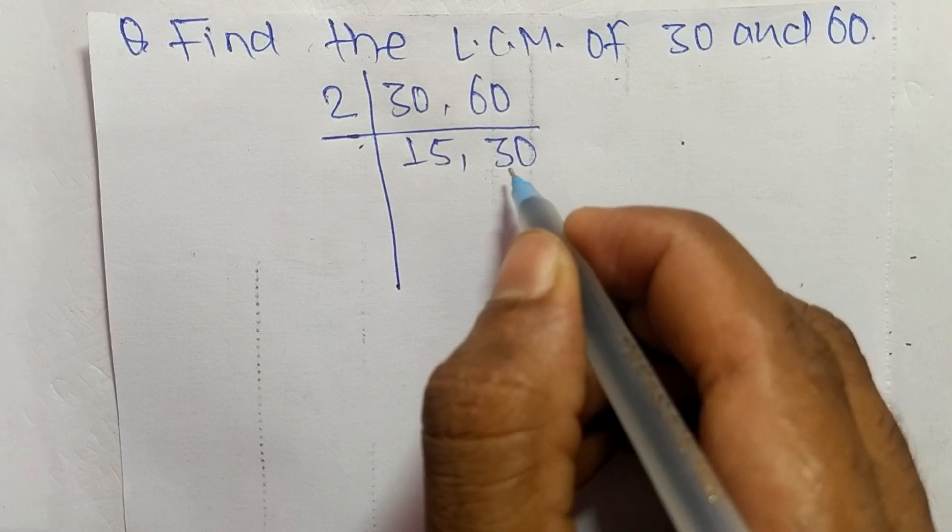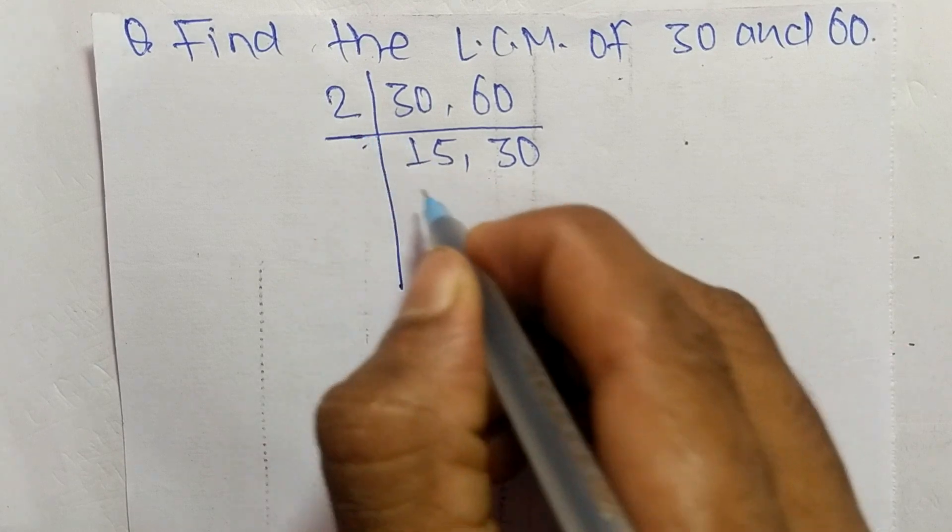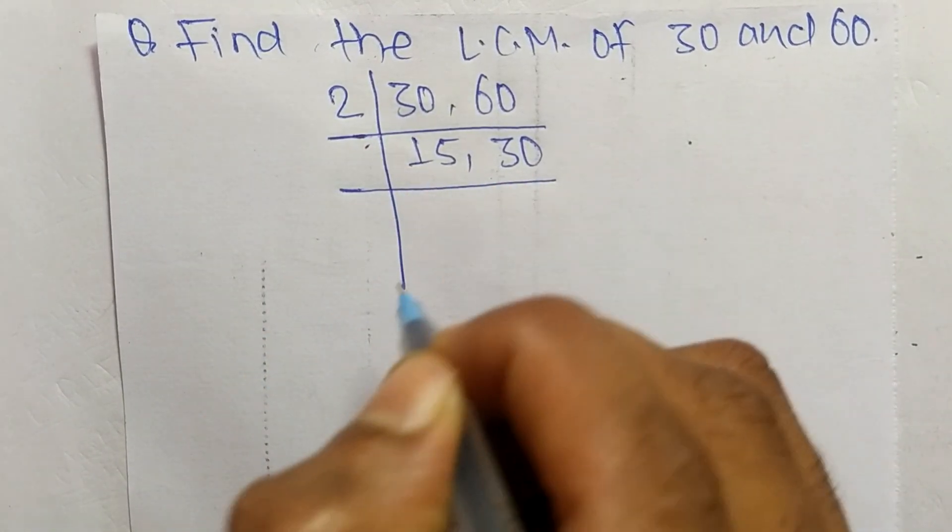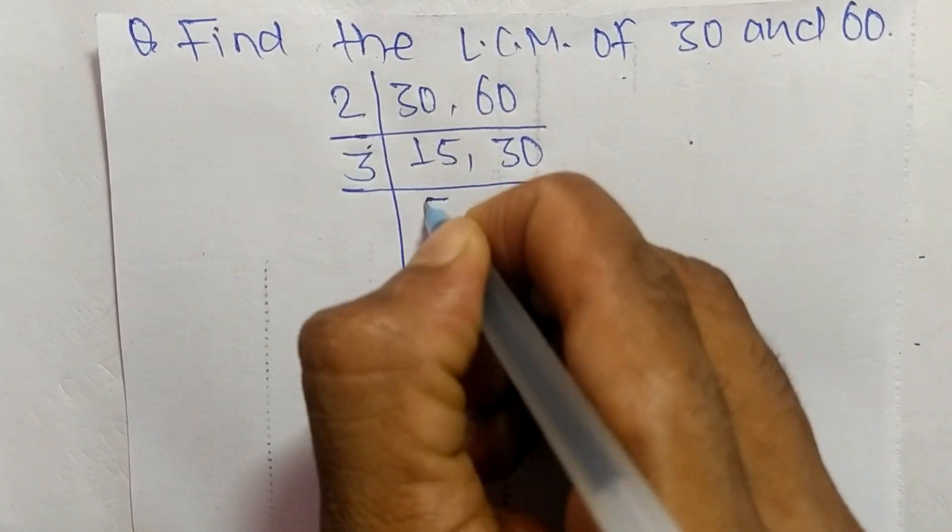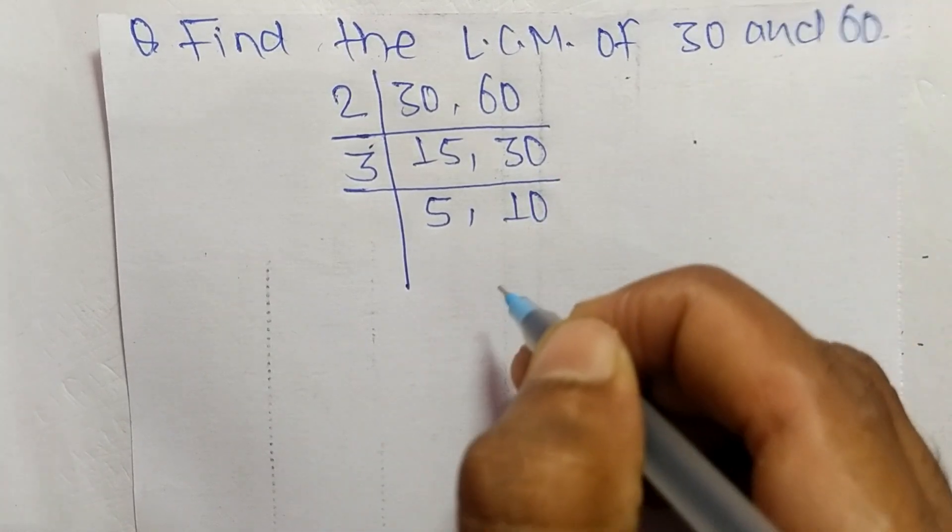Now 2 can exactly divide 30 but can't exactly divide 15, so we choose the number greater than 2 that can exactly divide 15 and 30. The number is 3. So 3 times 5 equals 15, and 3 times 10 equals 30.